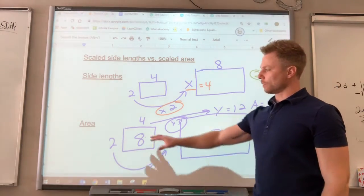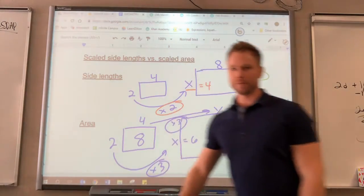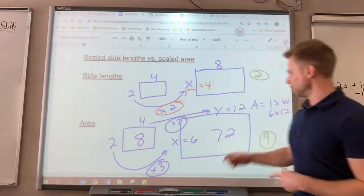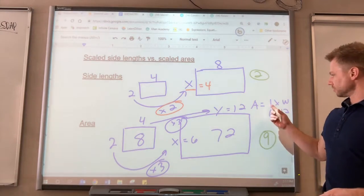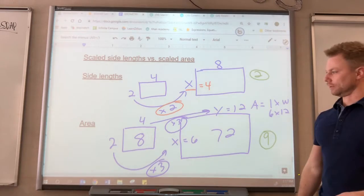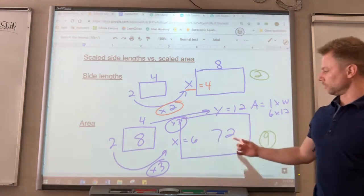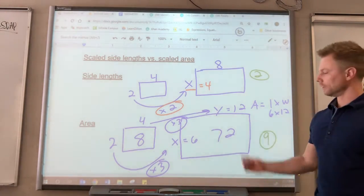So when you're talking about area, you have to remember you're doing it twice. You're multiplying the scale factor for the length and for the width. So you have to include both of those in order to find the scaled area.